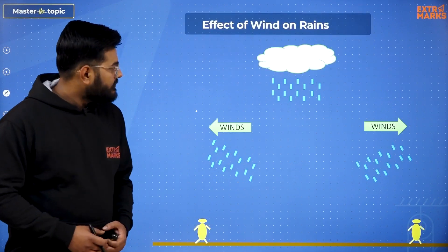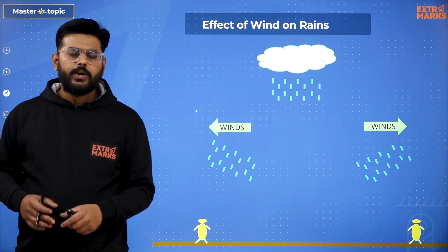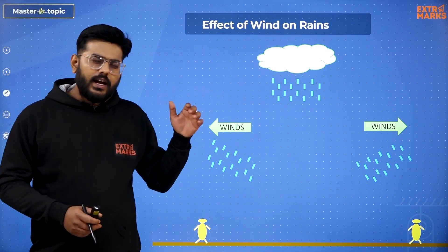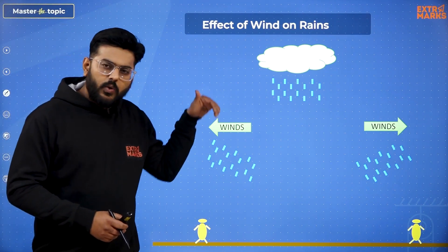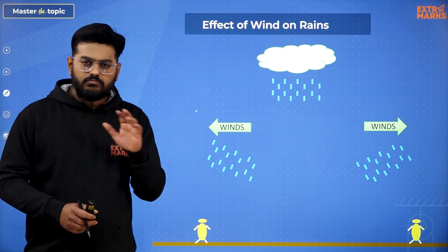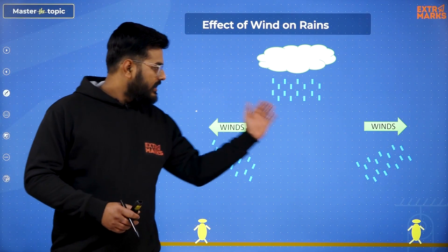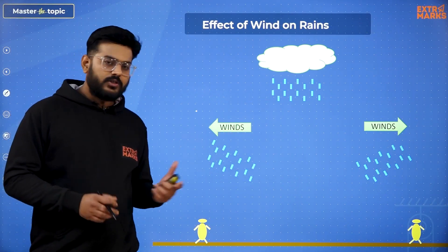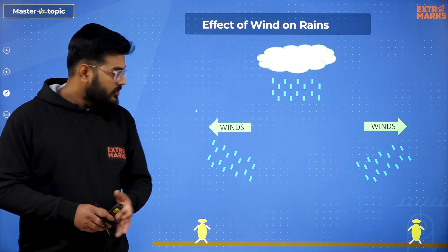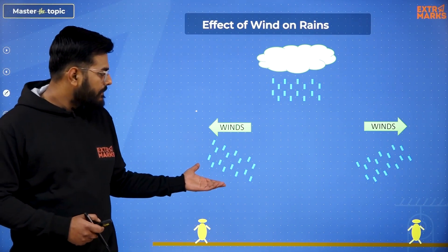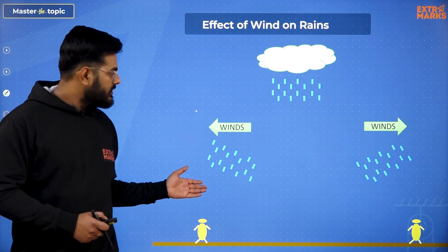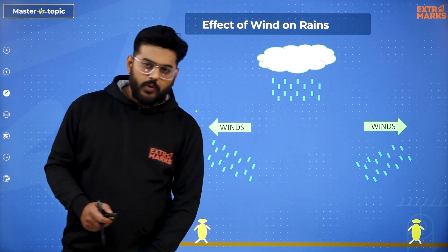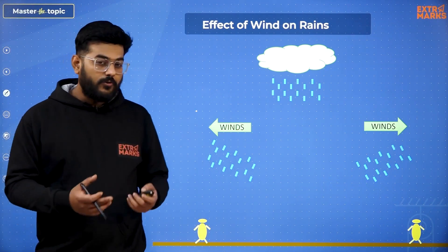So for a start, let me make one concept very clear. What happens is rains, when falling from clouds, tend to maintain the direction vertically downward. So whether rains are falling somewhat like this or somewhat like that, it is solely the result of winds on them. Winds blowing towards the left will make the rains come like this, and winds blowing towards the right will make the rains move like that. So this is basically the effect of winds.